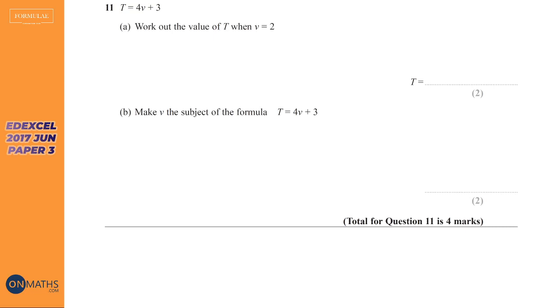The first part of Edexcel's question, you're just asked to substitute. So it says find the value of T when v equals 2. So we know that T equals 4 times v, but if v is 2 it's going to be 4 times 2. I'm going to put that in brackets because BIDMAS says we've got to do that bit first. So 4 times 2 is 8 plus 3, so T is 8 plus 3 which is 11, so T equals 11.